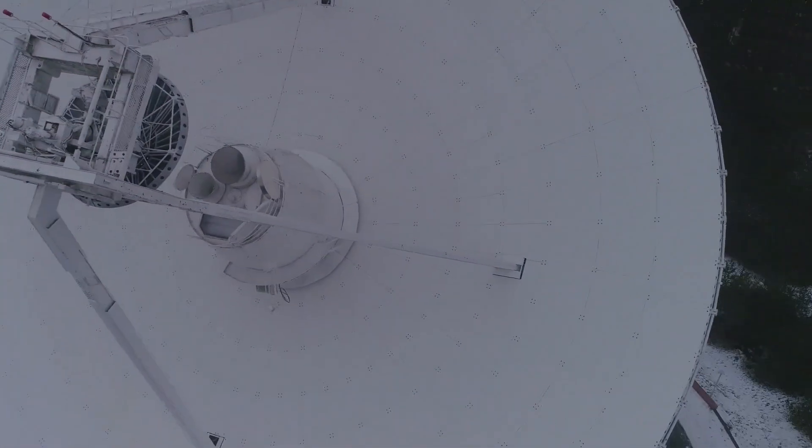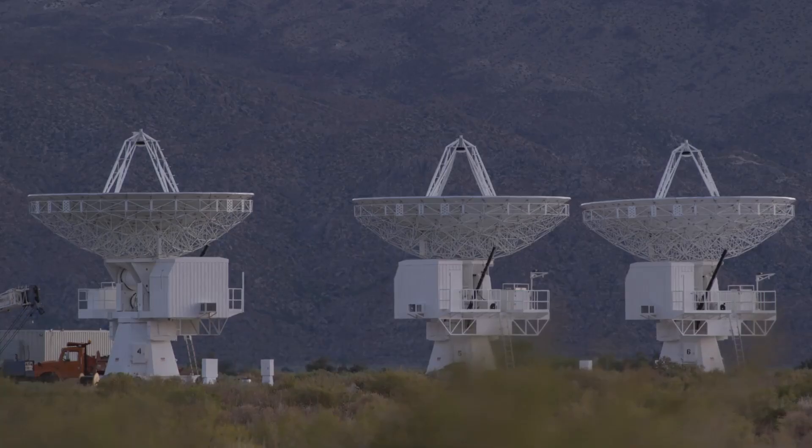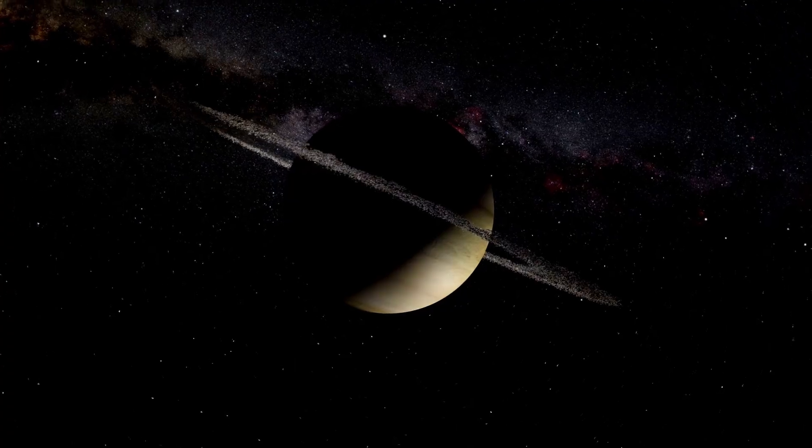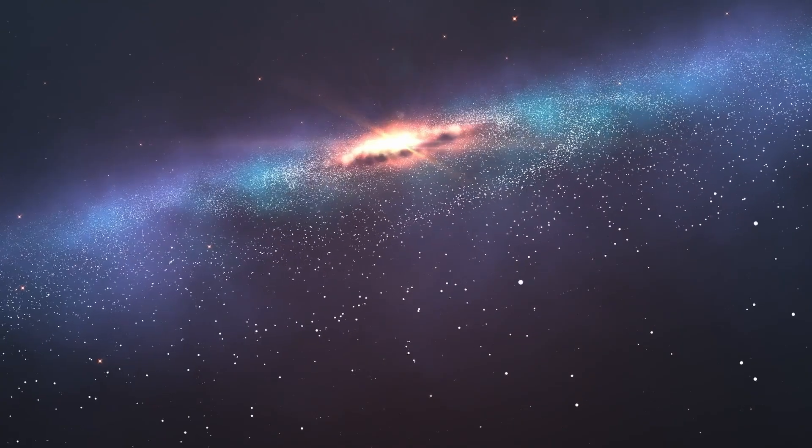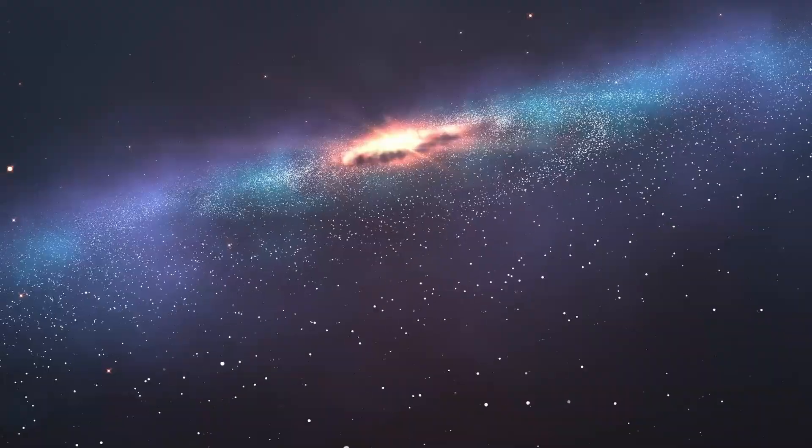Satellites orbiting Mars began to register unexplained fluctuations in their sensors, as if the red planet itself was already within the influence of the approaching body. Even the James Webb Telescope reported interference when attempting to focus on the region near Mars.